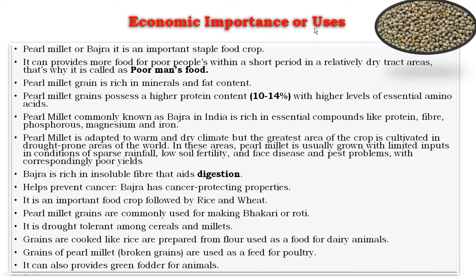Next, the economic importance or uses of pearl millet. Pearl millet, or Bajra, is an important staple food crop next to wheat and rice, then sorghum. It provides more food for poor people within a short period of time in relatively dry tract areas. That is why it is called the poor man's food.